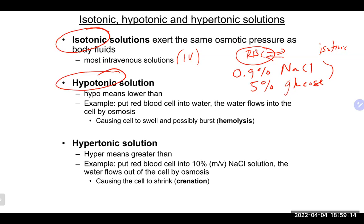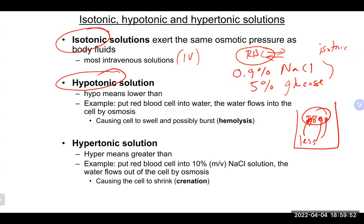Hypotonic means the solution outside the cell is less concentrated than inside. Osmosis pushes water from the outside (lower concentration) into the cell (higher concentration), causing the cell to swell. Eventually the red blood cell can burst — a process called hemolysis. This is like the 'jelly donut' — everybody rushes in and it explodes.